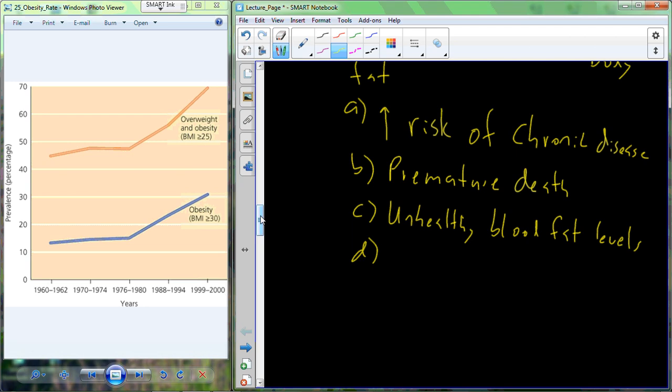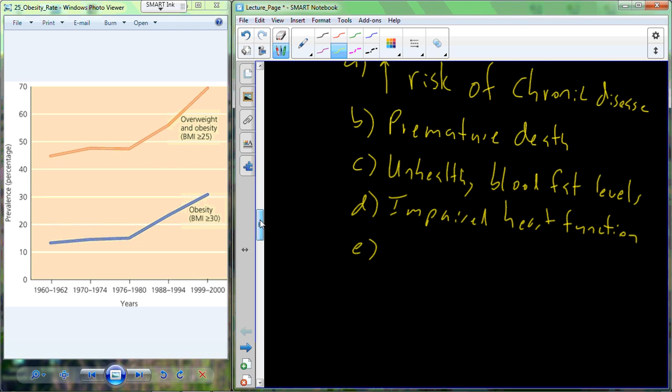They will exhibit unhealthy blood fat levels and will also exhibit impaired heart function. And because of this impaired heart function and the high levels of blood fat, individuals who are overweight and obese have a higher prevalence of heart disease, high blood pressure, and high potential for other complications.